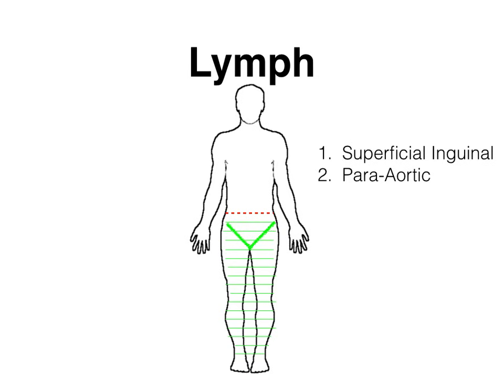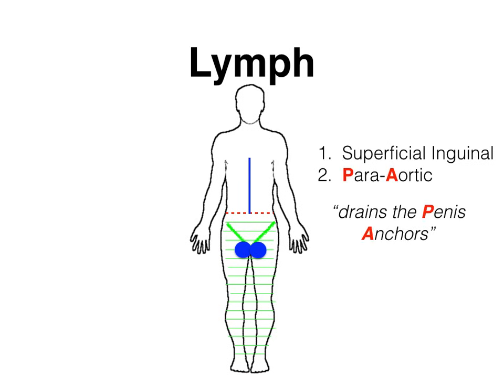Para-aortic lymph nodes are found, as the name suggests, para-aortically — on the sides of the abdominal aorta. I've drawn in a blue line representing the aorta running through the abdominal content, and it drains the gonads, drawn in as two big blue balls. The mnemonic for remembering that the para-aortic lymph nodes drain the gonads or testicles is that the para-aortic lymph nodes drain the 'penis anchors' — PA for para-aortic lymph nodes.